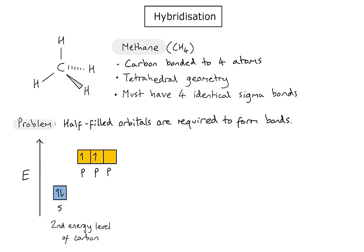The problem is that if my carbon atom on its own only has two half-filled orbitals, this suggests it should only be able to form two covalent bonds. So what chemists are suggesting is that the process of hybridization occurs to allow us to form four orbitals which are all identical, with one electron in each.